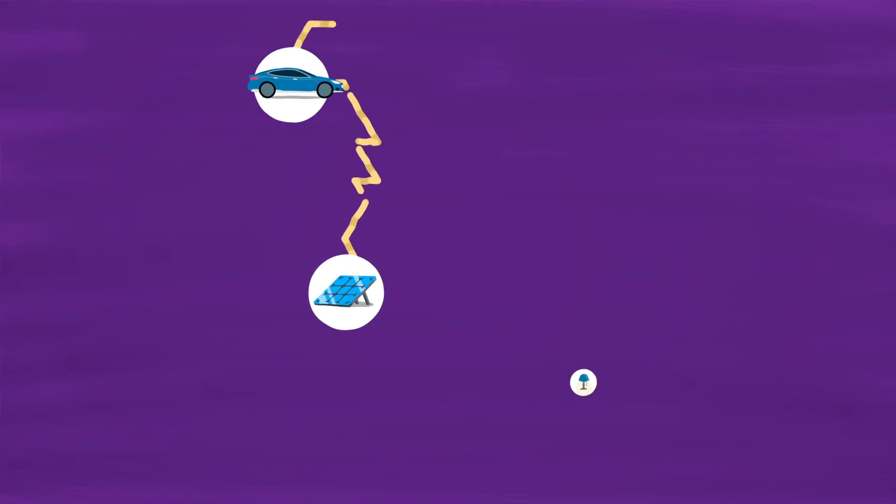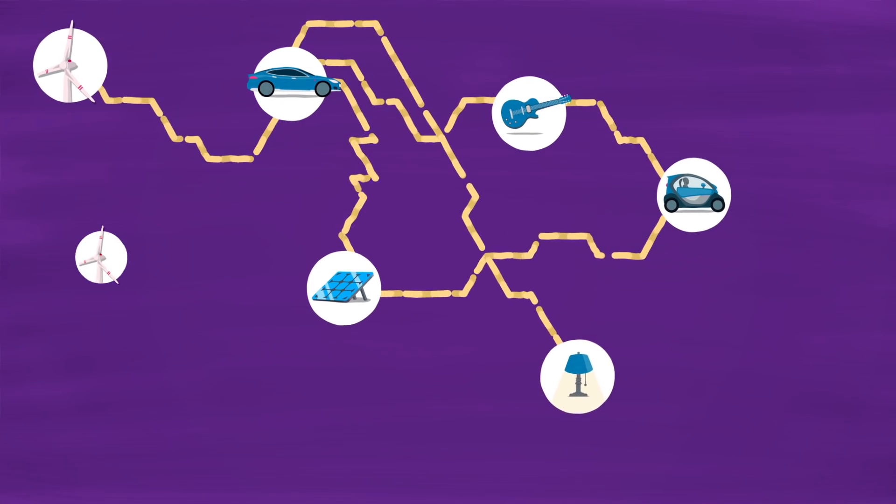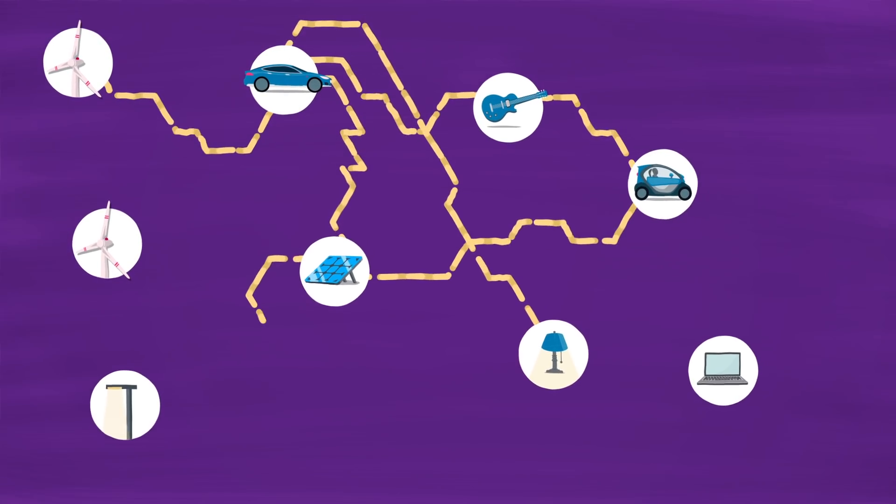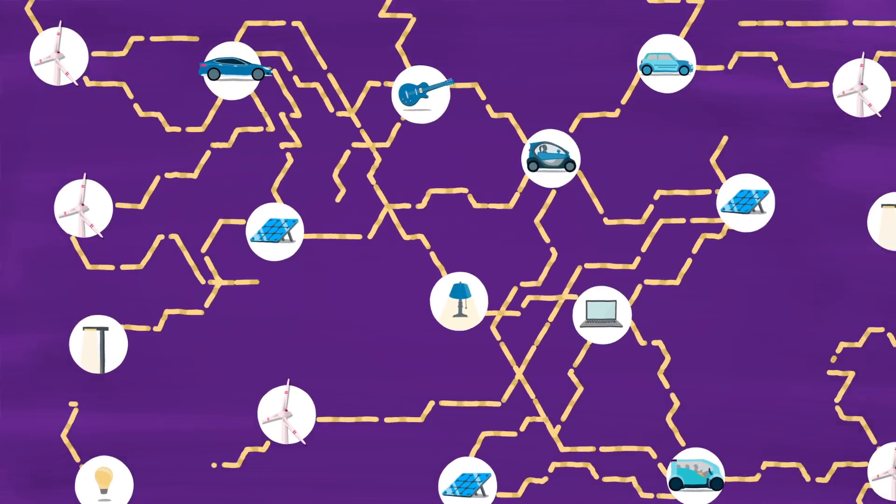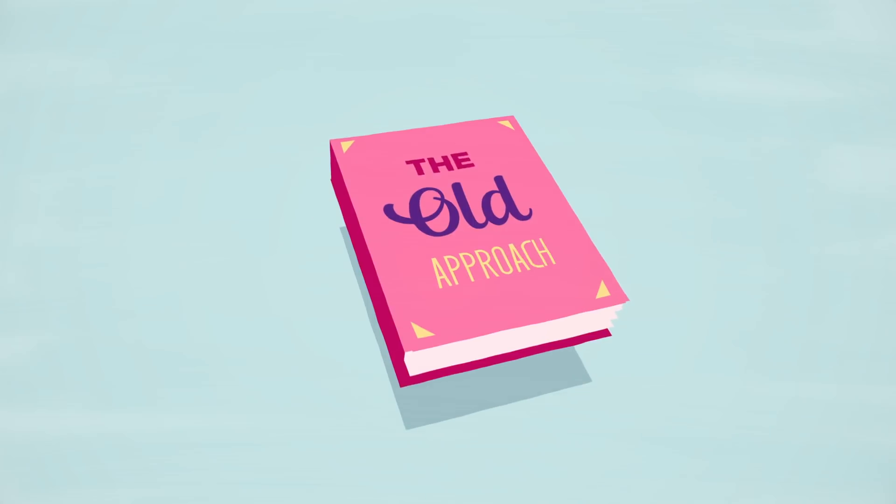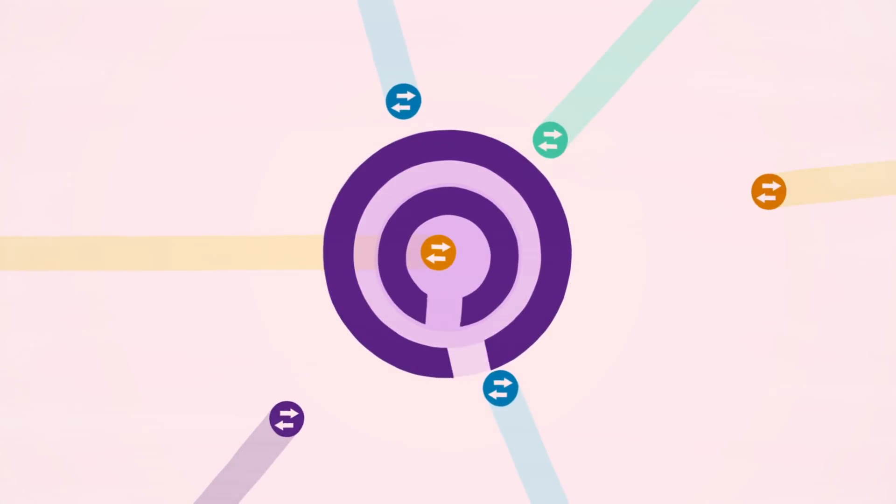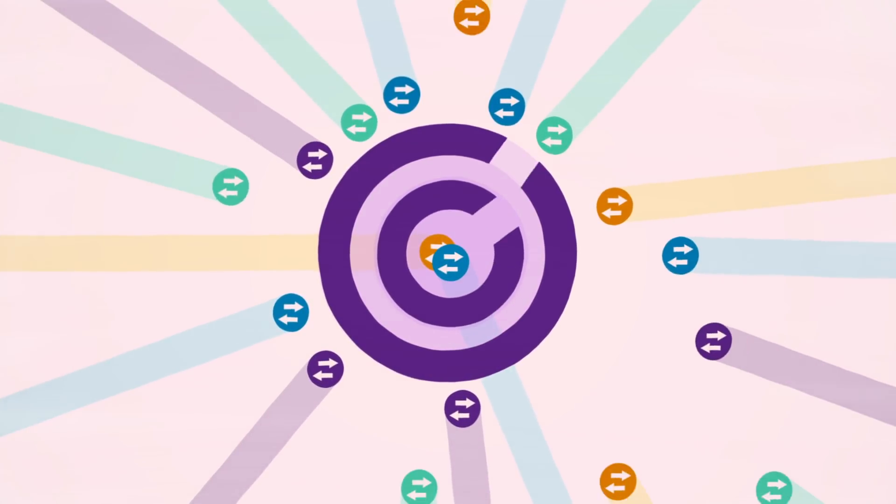To successfully automate this whole process both data and value transactions have to be calculated for every exchange between these devices. In the future these will increase exponentially. The old approach of registering every electricity exchange centrally and then paying through the bank afterwards is not particularly appropriate for these kinds of micro transactions.